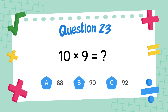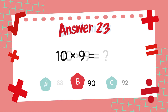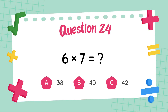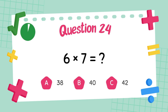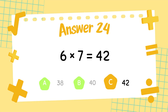What is 10 times 9? The answer is 90. What is 6 times 7? The answer is 42.